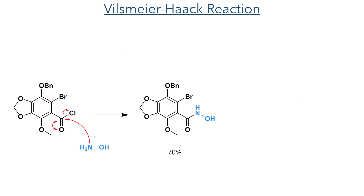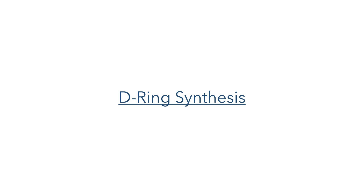This acyl chloride was reacted with hydroxylamine to produce the hydroxamic acid that would be used in the nitroso Diels-Alder reaction. So with this fragment in hand, let's look at the synthesis of the D-ring.